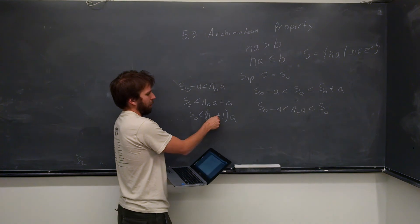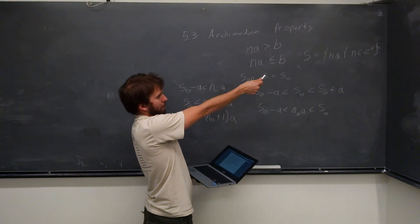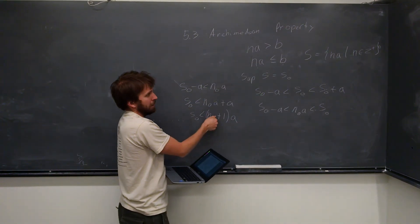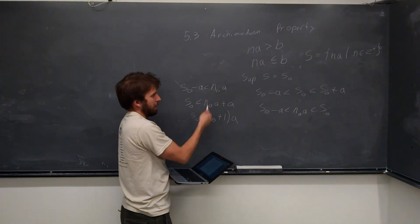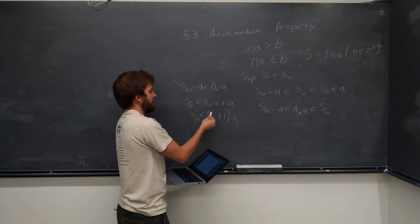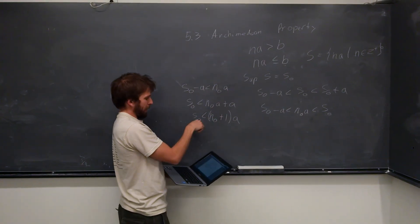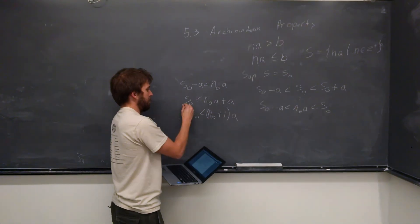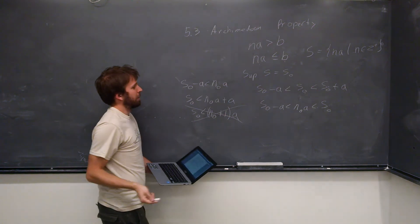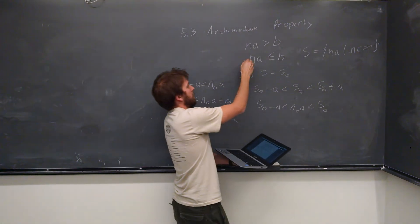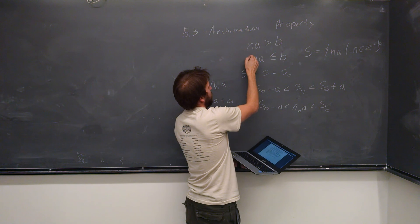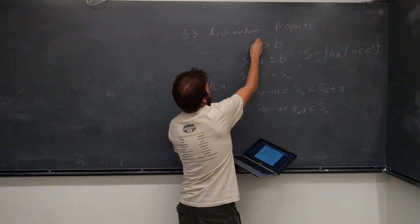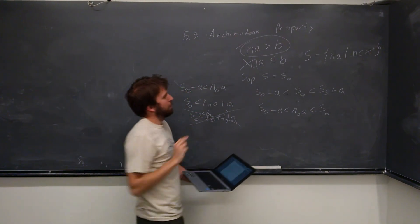But we also know that N-naught plus 1 still holds as part of our set because any positive integer plus 1 is still a positive integer. So now we're faced with this dilemma of how our supremum can be less than something in our set, and we know that this cannot be true. Since this is a contradiction, this is not true either, and we have shown that the property must be true.